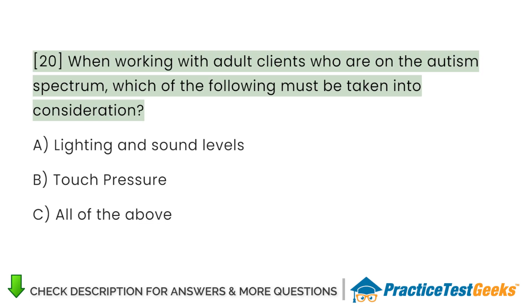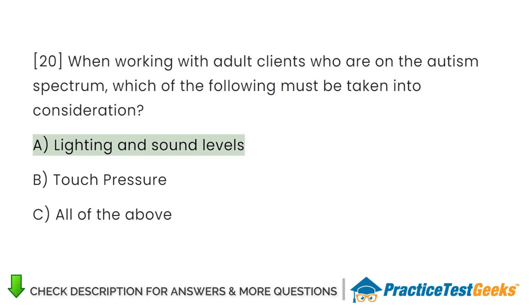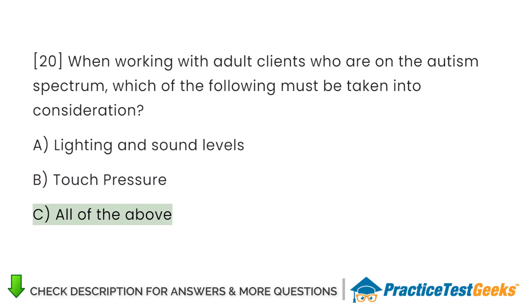When working with adult clients who are on the autism spectrum, which of the following must be taken into consideration? A. Lighting and sound levels. B. Touch pressure. C. All of the above.